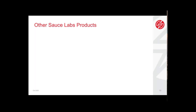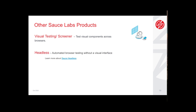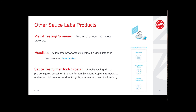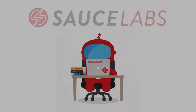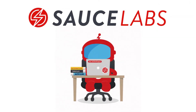In addition to these features, Sauce Labs also offers visual testing with Screener to test visual components across browsers and environments, headless testing to speed up automated testing outside of a visual interface, and the Sauce Test Runner Toolkit to support non-Selenium or Appium test frameworks and report test data to the Sauce cloud. To learn more about Sauce Labs automation and features, visit training.saucelabs.com and continue with this course. Thank you!